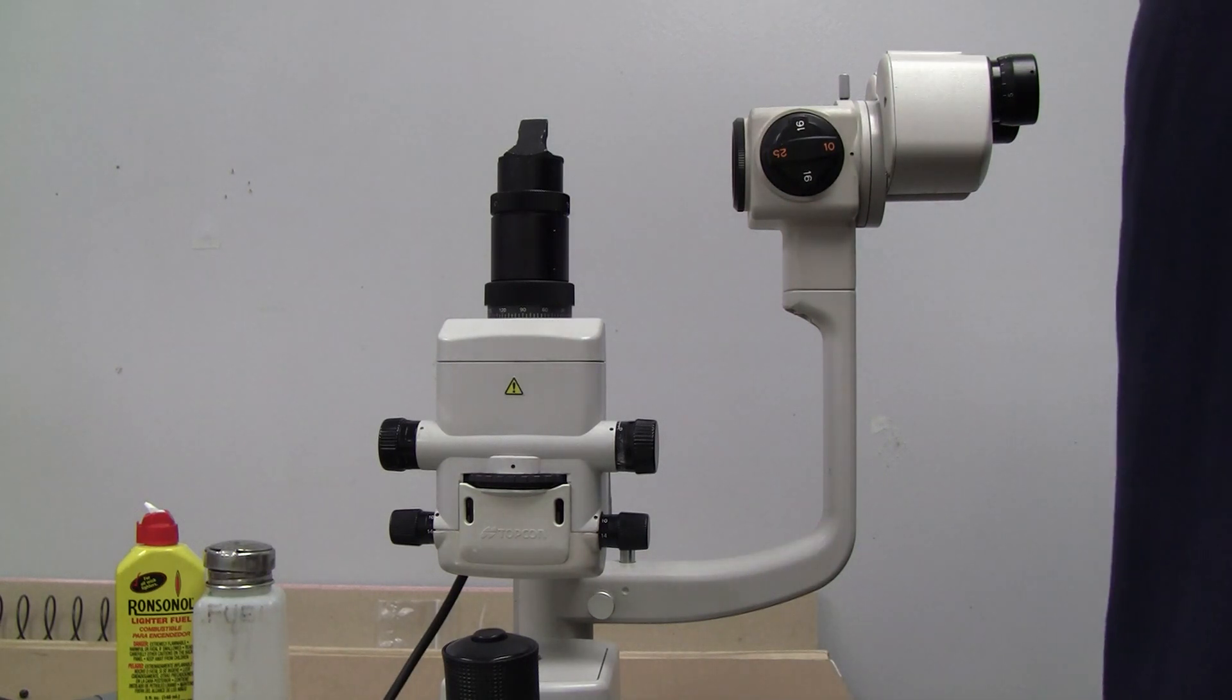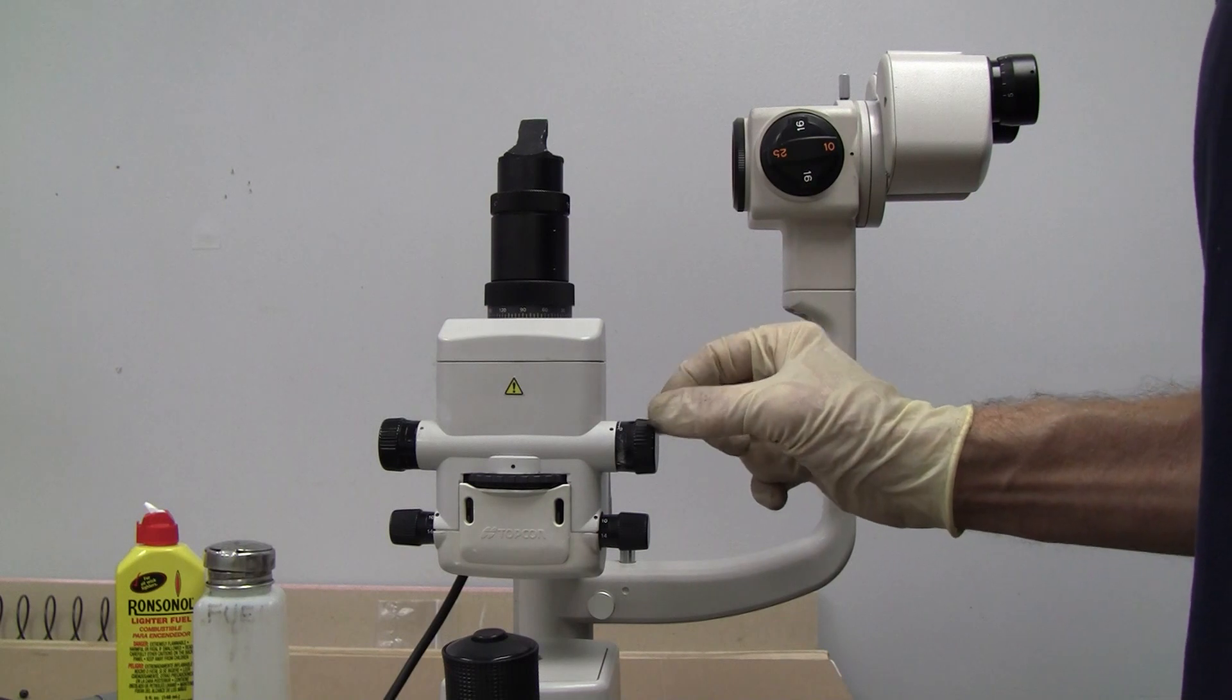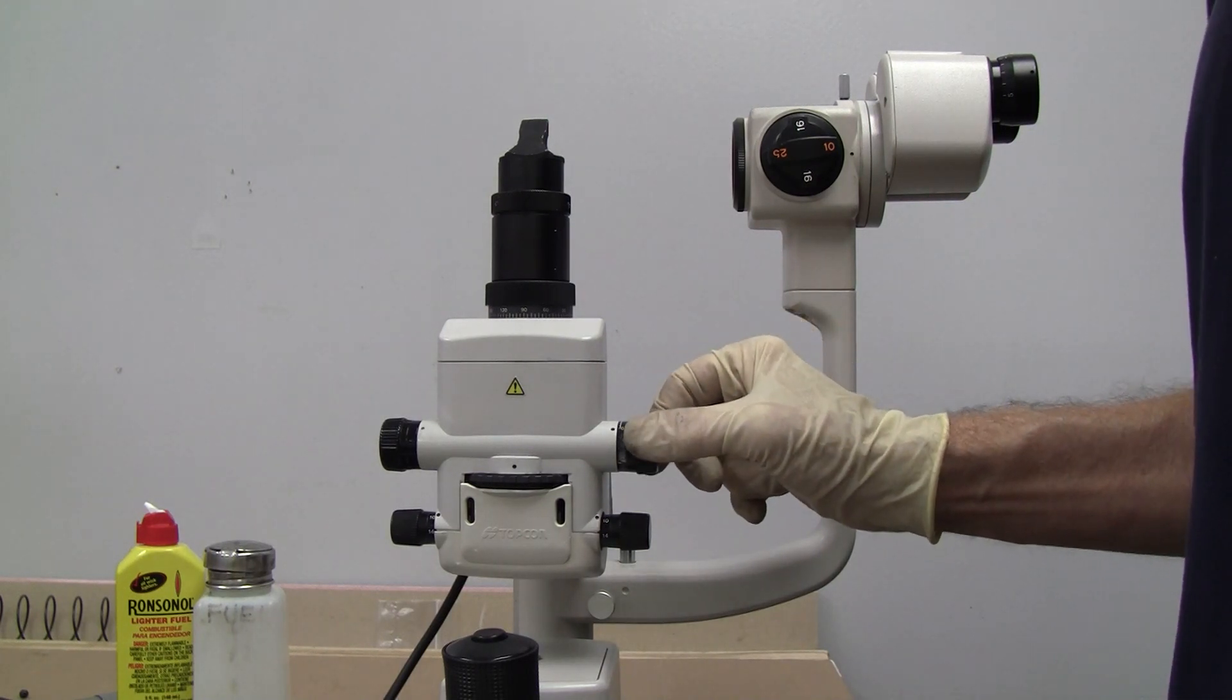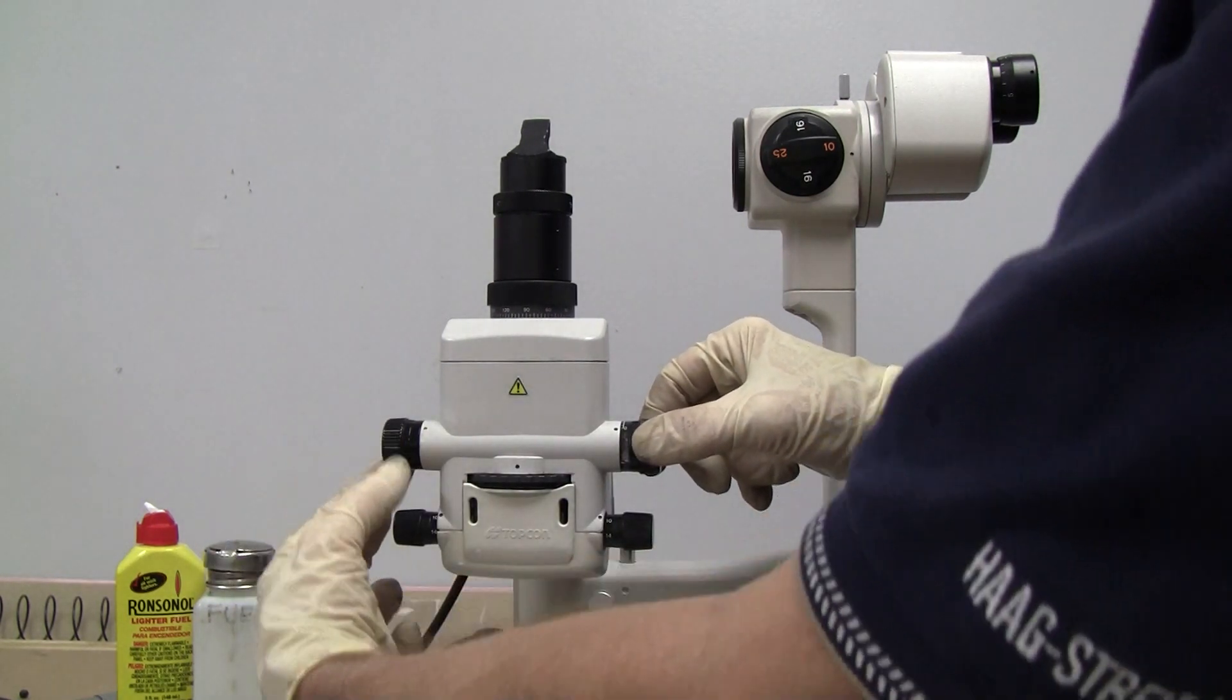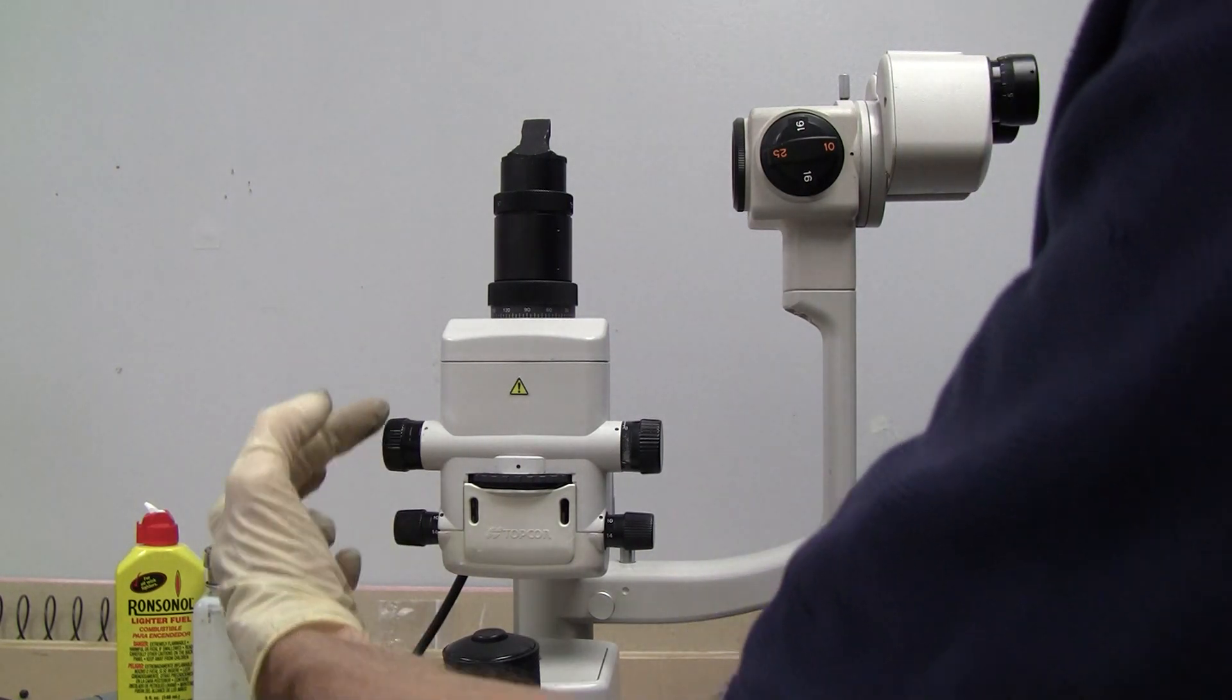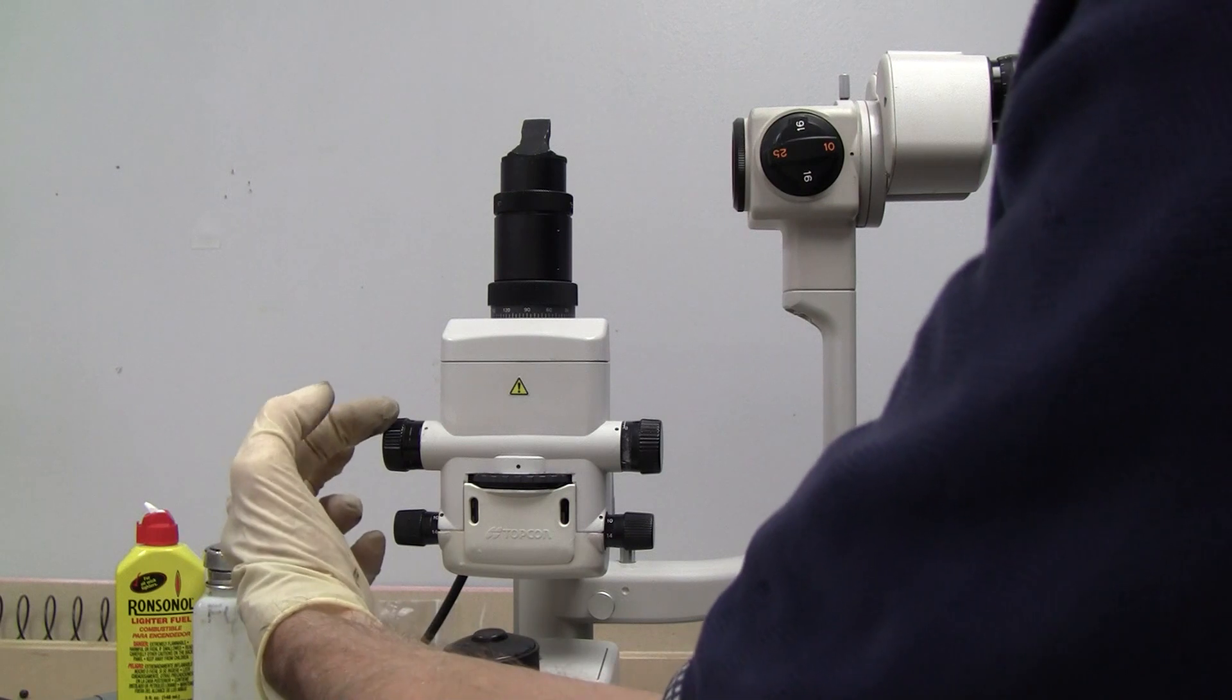On this Topcon D2, there was a previous video where the slit drift adjustment was made by taking off this knob and adjusting the locking nut, tightening it and putting it back on to get more tension to keep the slits from closing.